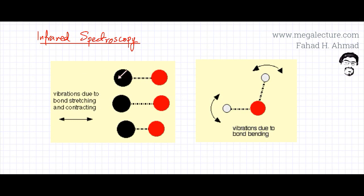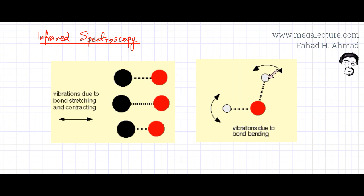So atoms that are bonded together by shared electrons would be vibrating, stretching and compressing. Similarly, if you have a molecule with a particular shape, the bonds would also be moving to and fro. They're not going to be stationary. So there are vibrations due to bond bending and vibrations due to stretching and contracting.